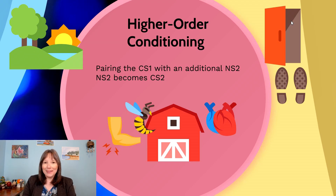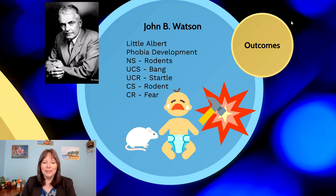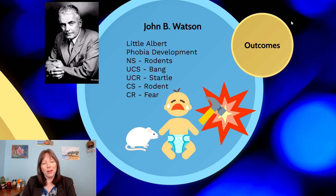Now that we've run through the basics of classical conditioning, let's try and see how they apply to the example of Watson's work with Little Albert. We talked about this in unit one in the history of psychology, so this should be familiar. If you recall, there was an infant named Little Albert who was brought into the lab, and Watson wanted to see if he could train a phobia. It was successful.